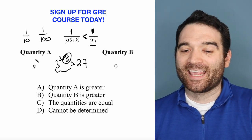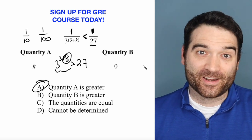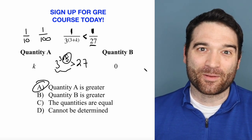So in this case, k must be bigger than 0. Quantity A must be greater than quantity B. For more GRE tips and tricks, or to sign up for my online course, follow the link on my profile.